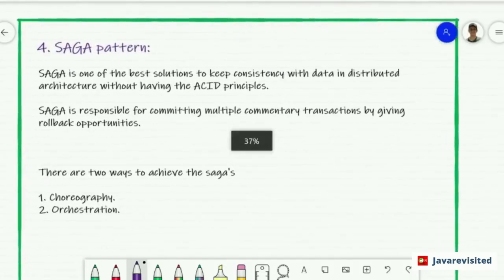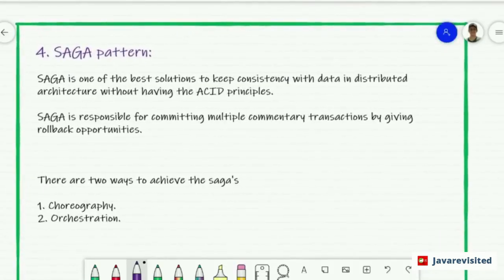What's the saga pattern? Saga is one of the best solutions to keep consistency with data in distributed architecture without having the ACID principles. Saga is responsible for committing multiple transactions by giving rollback opportunities. There are two ways to achieve this - the first one is choreography and the second one is orchestration.